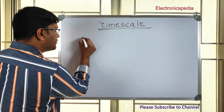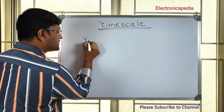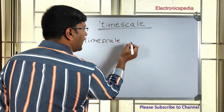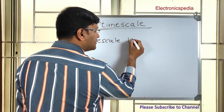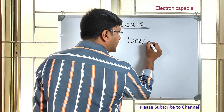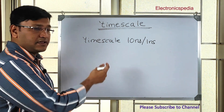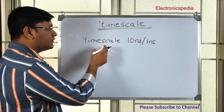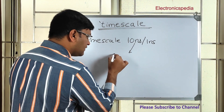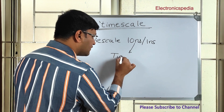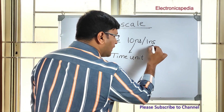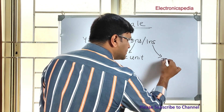Assume you have a SystemVerilog file with a timescale of 10 nanoseconds by 1 nanosecond, written as `timescale 10ns/1ns. Here, the first value — 10 nanoseconds — is the time unit, and the second value — 1 nanosecond — is the time precision.